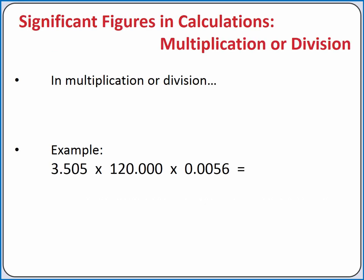We have different rules for significant figures in multiplication or division and addition or subtraction. For multiplication or division, the number of significant figures in our answer can only have as many significant figures as the factor with the fewest number of significant figures. If we were multiplying three measured quantities together, our calculator would say that the answer is 75,107.142. A calculator does not keep track of significant figures.